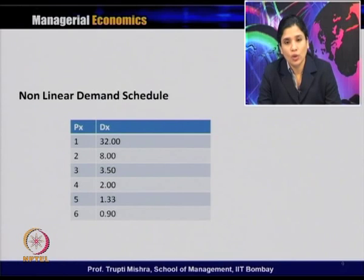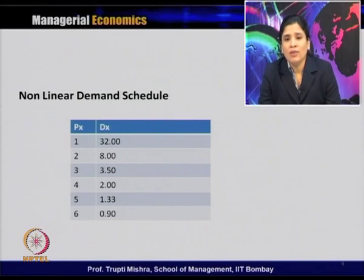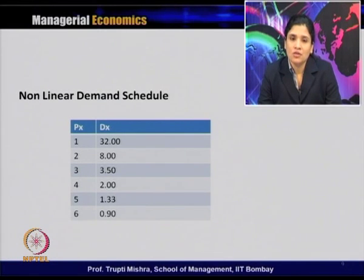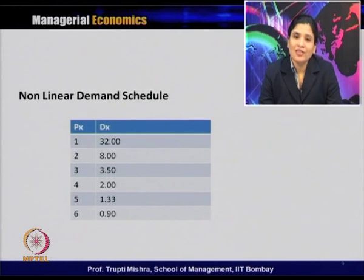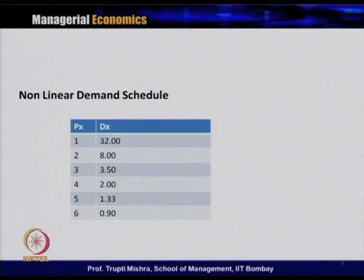As price continues increasing for 4, 5, and 6, quantity demanded keeps decreasing. The key point is not just the inverse relationship between price and quantity, but that the change in quantity demanded at each price point is different — this is the defining feature of a non-linear demand curve. When plotted, we get a curvilinear relationship — a curve, not a straight line. At different points on the curve, the change in quantity demanded is not the same.